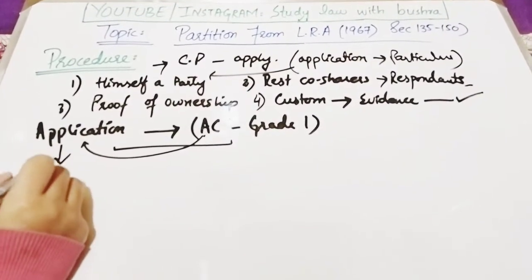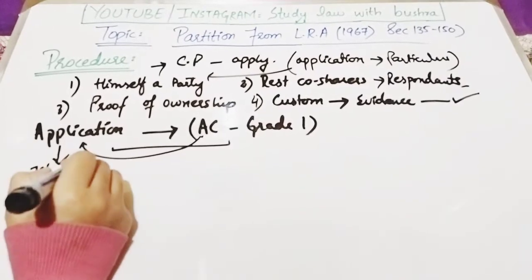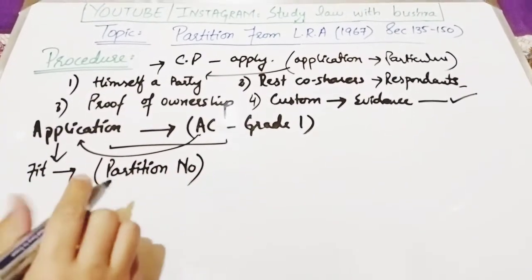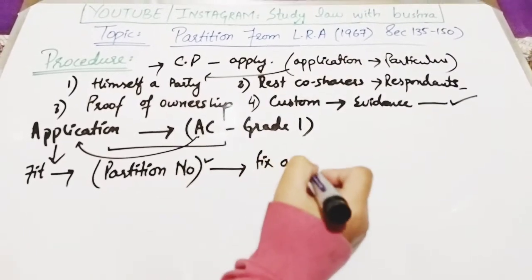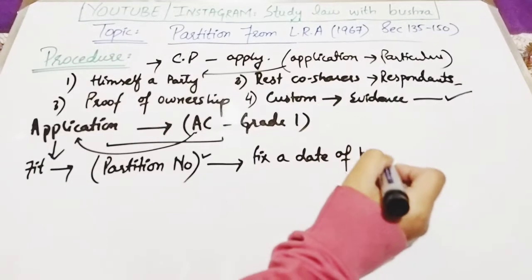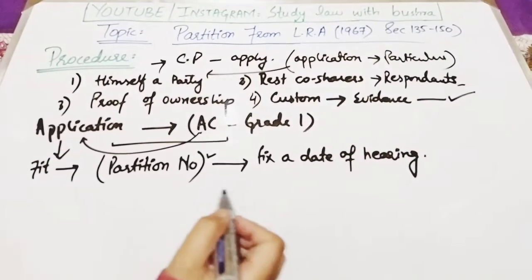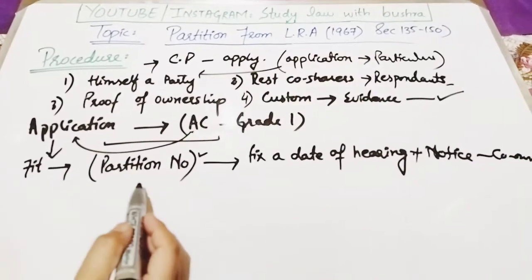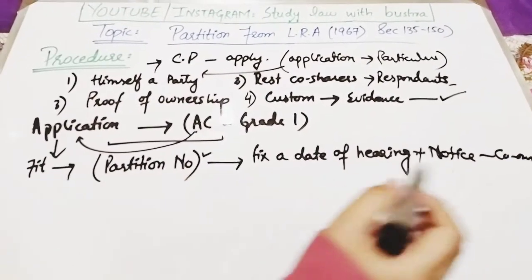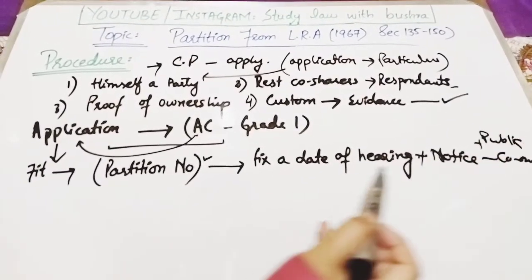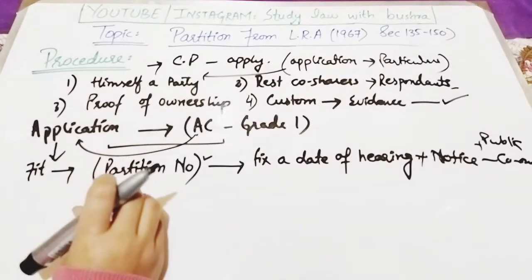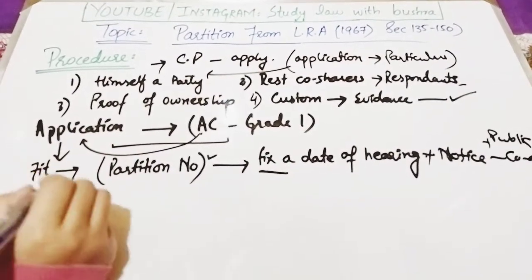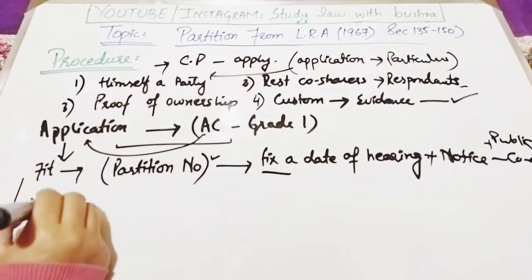Assistant Collector application کو properly دیکھے گا۔ اگر application clear ہو اور کوئی ambiguity نہ ہو تو وہ اسے ایک partition number دے گا اور date of hearing fix کرے گا۔ Date of hearing fix کرنے کے ساتھ وہ باقی co-owners کو notice بھیجے گا، اور general public کو بھی notice دے گا تاکہ اگر کوئی اور بندہ اس property کا claimant ہو تو وہ بھی date of hearing میں آ سکے۔